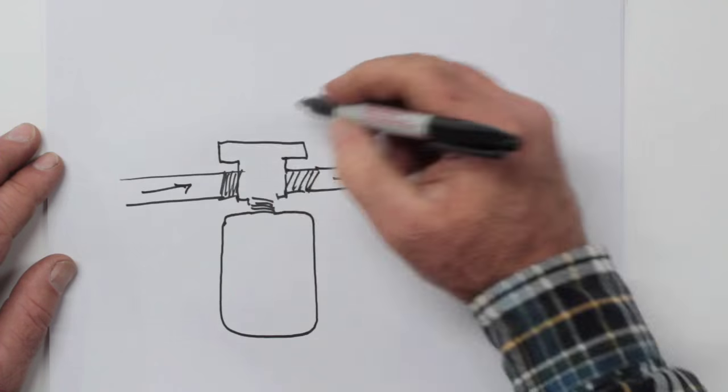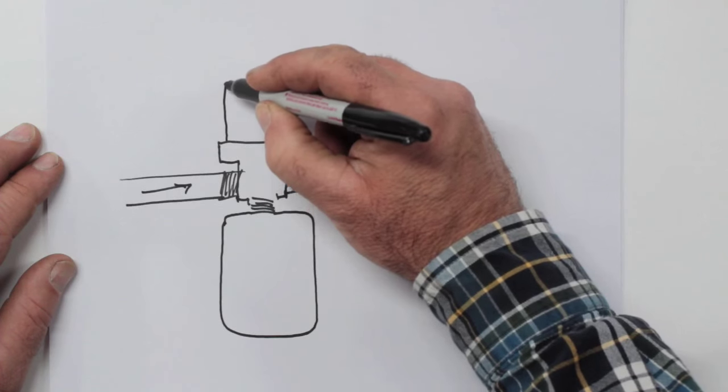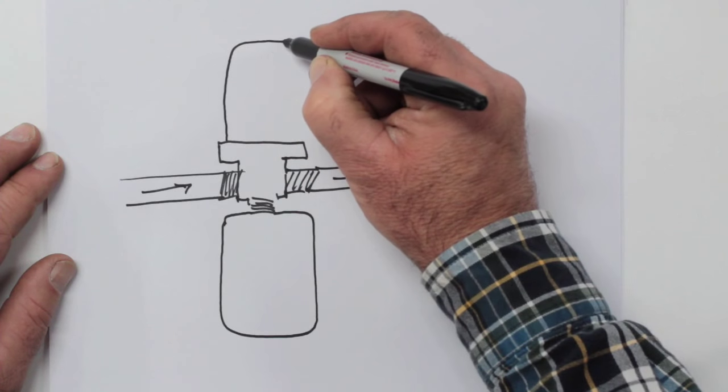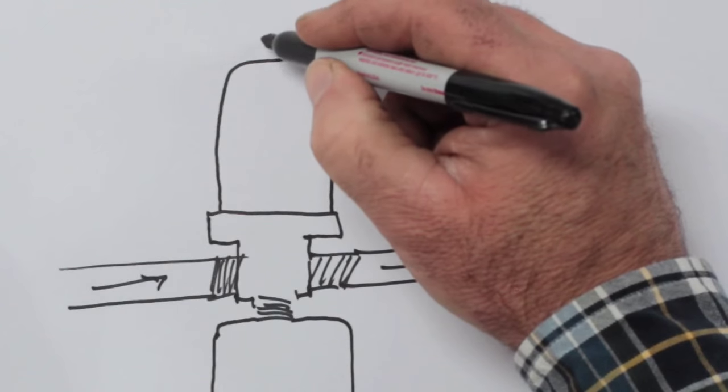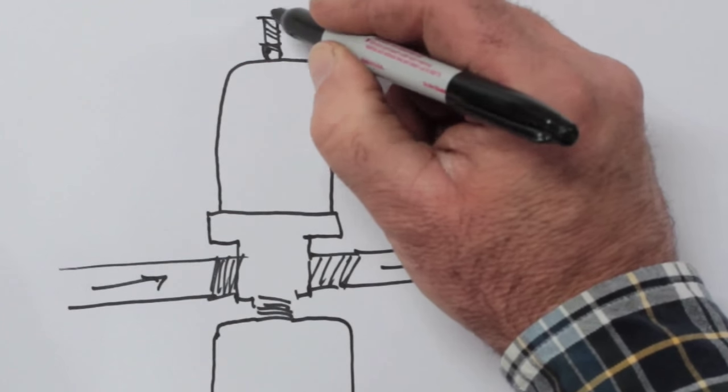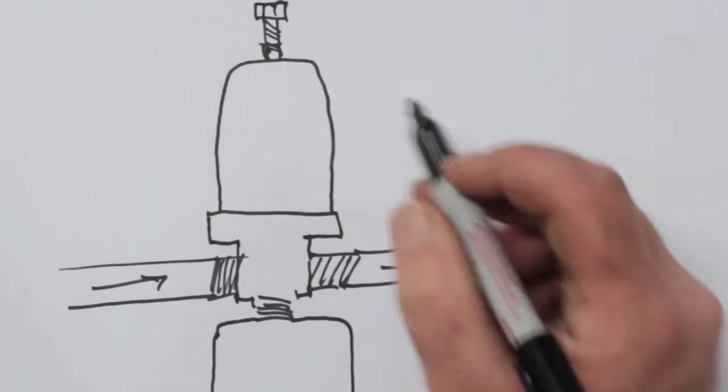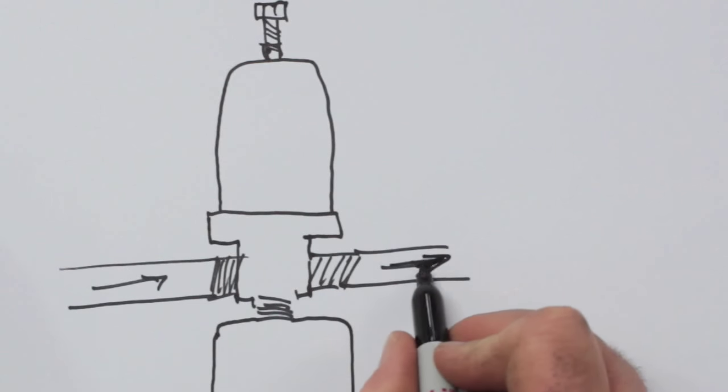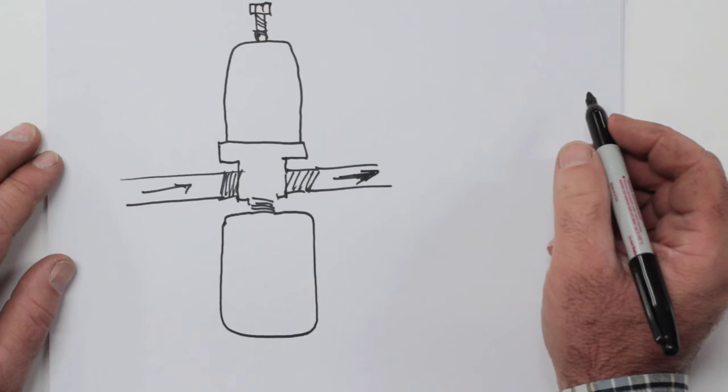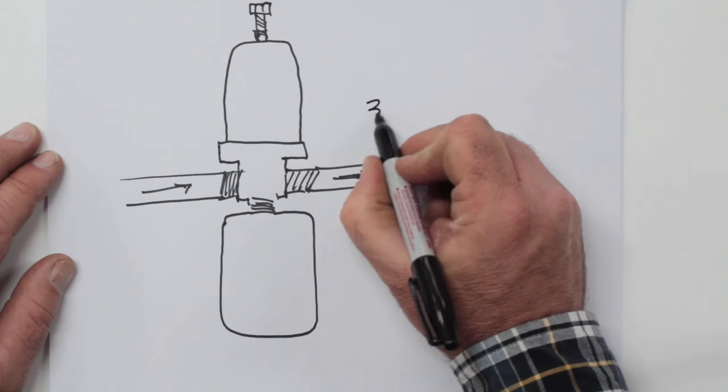Water comes in here and the flow of water is regulated by what goes on in the cycle stop valve itself. This is the adjustment bolt up top that allows you to vary the pressure at which it operates. So water comes in and it goes out at a constant pressure all the time you're using water.